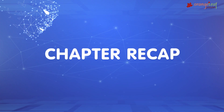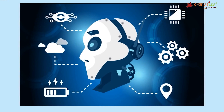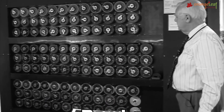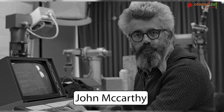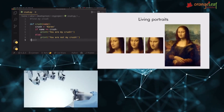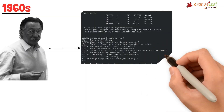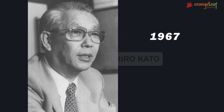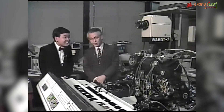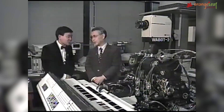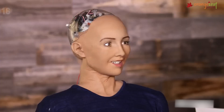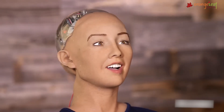Chapter Recap: Artificial intelligence is the ability of a machine to think and learn. In 1950, Alan Turing introduced the Turing test for evaluation of intelligence. John McCarthy created the first running AI program and is known as the father of artificial intelligence. Joseph Weizenbaum built the first chatbot, ELIZA. In 1967, Ichiro Kato developed an anthropomorphic robot called Wabot. Wabot 2 was a humanoid robot that could read a musical score and play an electronic keyboard. In 2014, Google launched a driverless car. In 2016, Sophia was created by David Hanson.